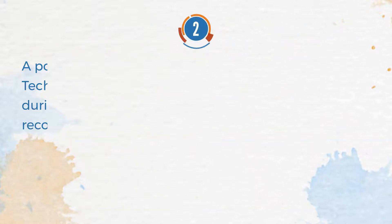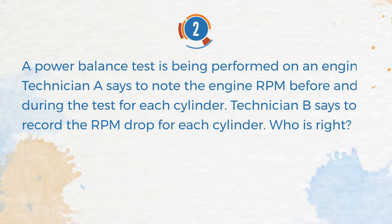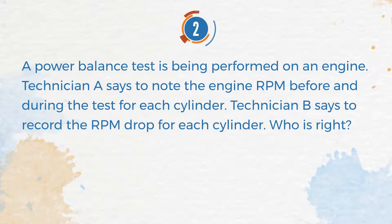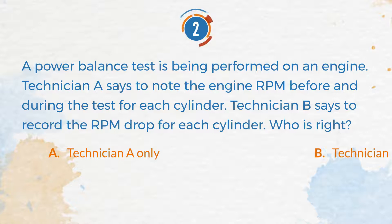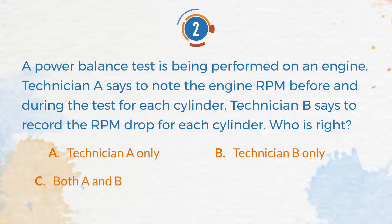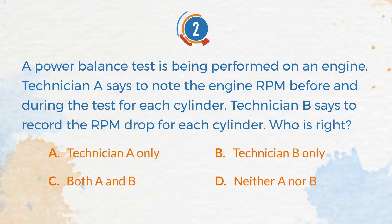Number 2. A power balance test is being performed on an engine. Technician A says to note the engine revolutions per minute before and during the test for each cylinder. Technician B says to record the revolutions per minute drop for each cylinder. Who is right? A. Technician A only. B. Technician B only. C. Both A and B. D. Neither A nor B.